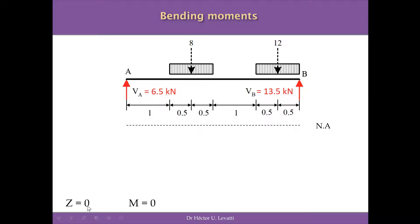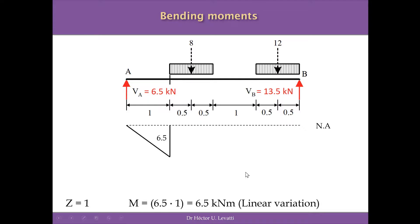At z = 0 (point A), the moment is equal to zero because we have a pin support with a hinge, allowing rotation. At z = 1 m, the moment is 6.5 kN × 1 m = 6.5 kN·m. Between forces, there is a linear distribution of moments, as shown in the bending moment diagram.